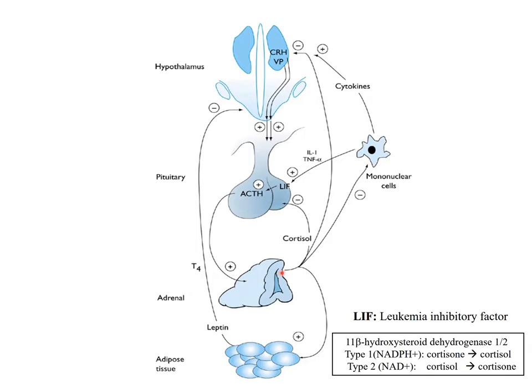Enzymes in target tissues convert steroid hormones or precursors to active hormones, or the opposite can occur. For example, 11-beta-hydroxysteroid dehydrogenase type 1 produces cortisol in adipocytes and liver, while in the kidney this cortisol is inhibited — a conversion to cortisone occurs — creating tissue-specific effects.